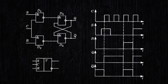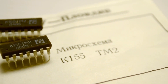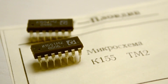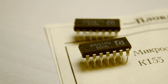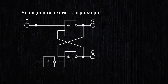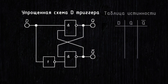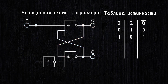Everyone was bothered by the forbidden state of the RS flip-flop, that it exists and is useless. That's why D and JK flip-flops were invented. A D flip-flop is essentially an RS flip-flop where the set and reset signals are combined through an inverter, meaning they are always opposite to each other. The D line comes out externally. You apply a 1 to D and set the flip-flop; apply a 0 and reset it. There are no other states, no forbidden zones.